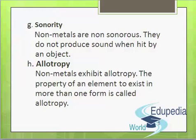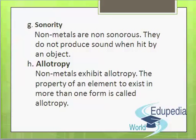Non-metals exhibit allotropy. The property of an element to exist in more than one structural form is called allotropy, and the different forms of an element are known as allotropes. For example, carbon exists in various allotropic forms like diamond, graphite, buckminsterfullerene, coke, and lamp black. Phosphorus also exists in five different forms: yellow phosphorus, red phosphorus, violet phosphorus, scarlet phosphorus, and black phosphorus. Sulfur also exists in various allotropic forms like monoclinic sulfur, rhombic sulfur, and plastic sulfur. So non-metals exhibit allotropy.